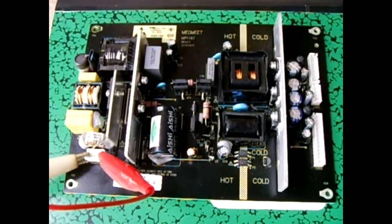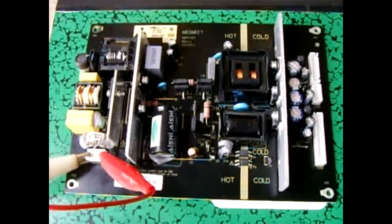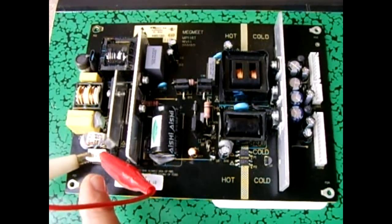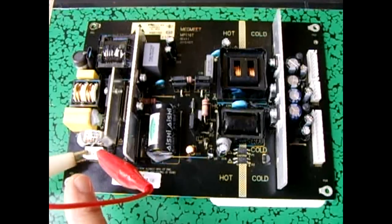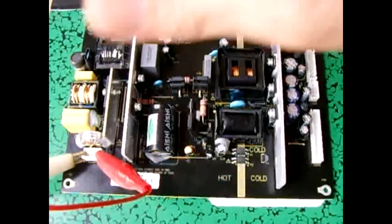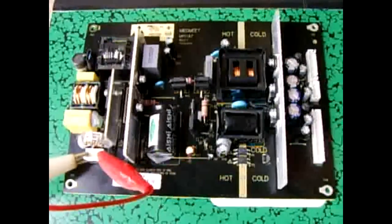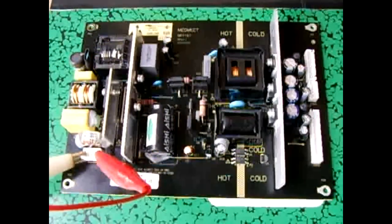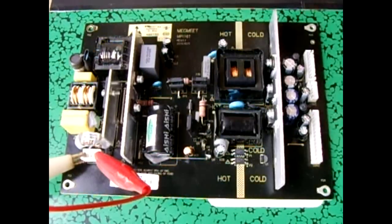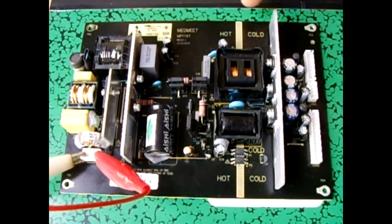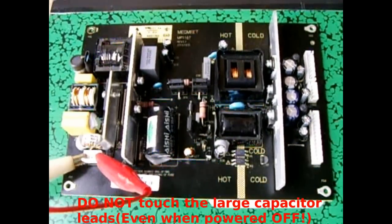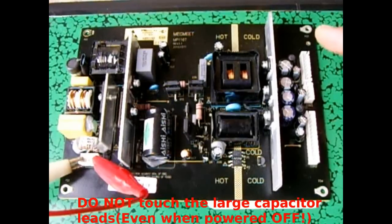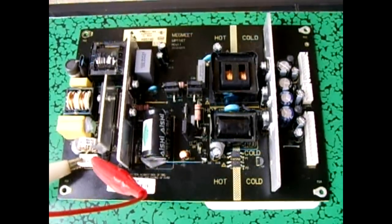Once the power board is removed from the television, leave the power cord attached to the board and plug it into the AC outlet. Once it's plugged in, do not touch anything on the hot side of the board because this is all high AC voltage. The cold side is low voltage DC. The highest voltage on this side is around 24 volts, and it goes as low as 5 volts.